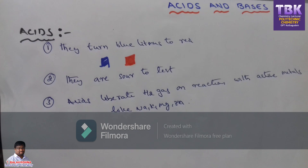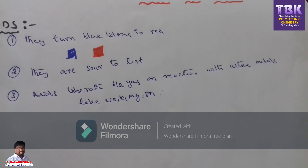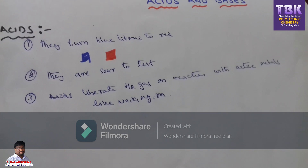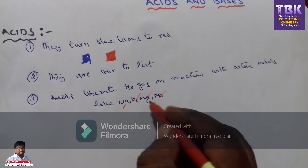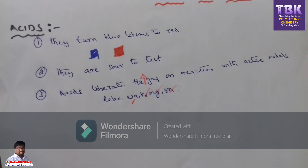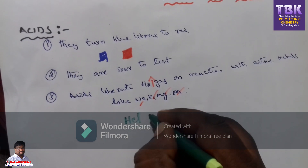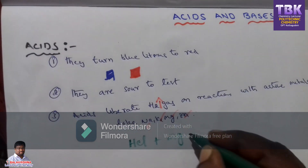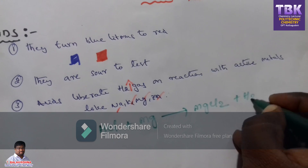Third point: acids liberate H₂ gas on reaction with metals like sodium, potassium and magnesium. For example, hydrochloric acid HCl reacted with magnesium produces magnesium chloride MgCl₂ and H₂ gas. When you balance the equation, 2 moles of HCl react with 1 mole of magnesium metal to produce MgCl₂ plus H₂.